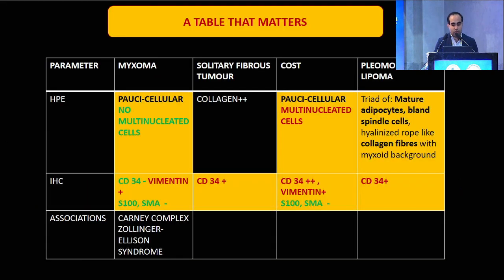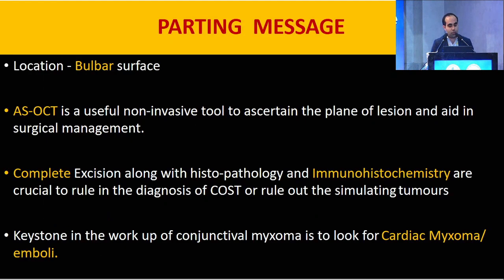This table helps us differentiate a myxoma from conjunctival stromal tumor or pleomorphic lipoma. Also, sarcomatous transformation of a myxoma is important for the life of an individual, because a concurrent atrial myxoma as part of the Carney complex — and also Zollinger-Ellison syndrome — may be present. Immunohistochemistry with various markers, location on the bulbar surface, and anterior segment OCT are very useful tools.